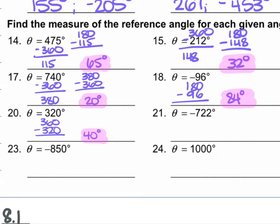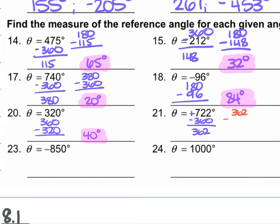For number 21, we have negative 722. We turn this into a positive and subtract 360 from it. 722 minus 360 gives us 362. We then take 362 and subtract 360, which gives us 2 degrees. That is our positive acute angle.